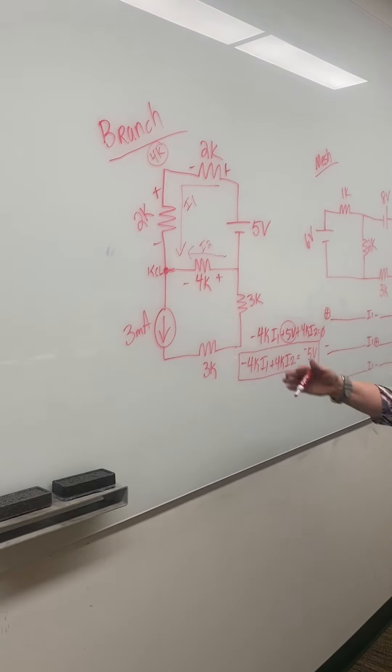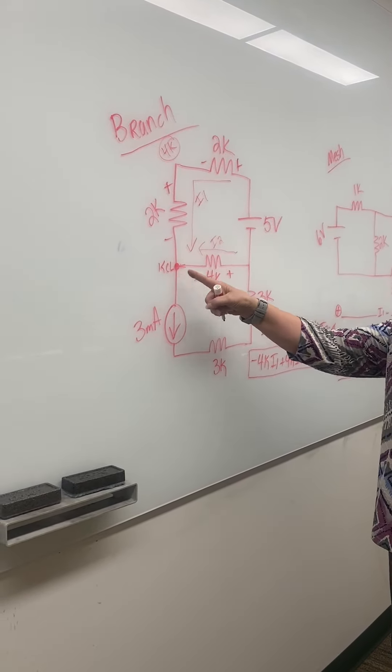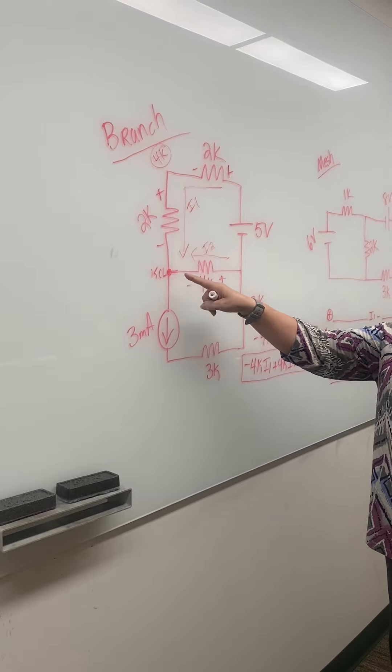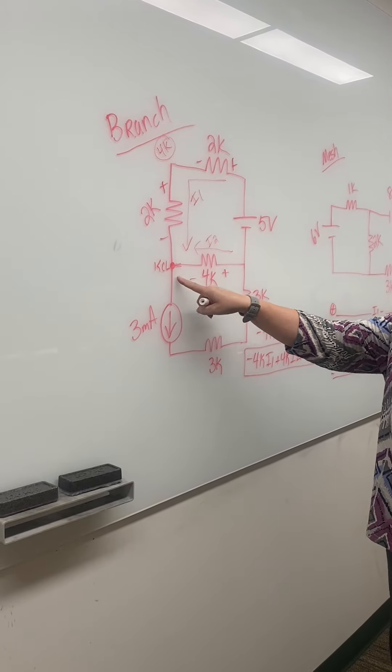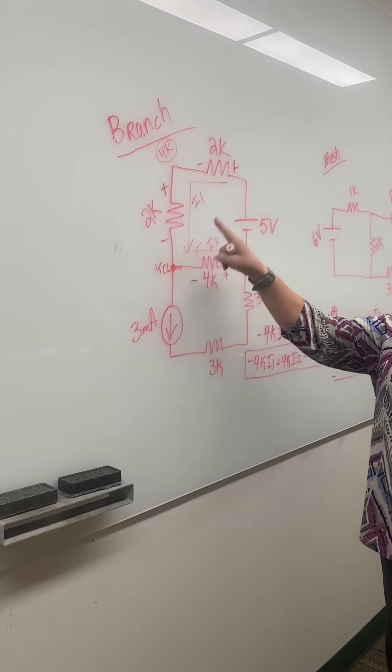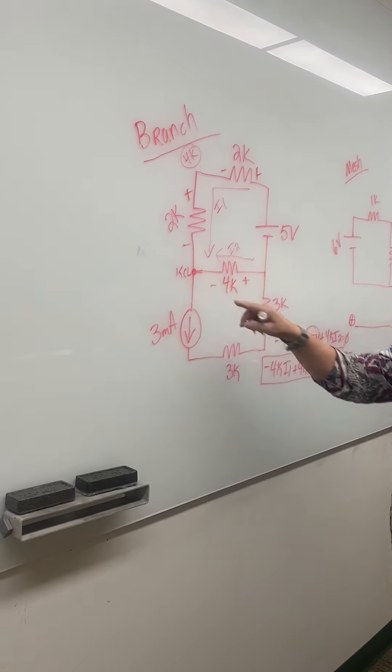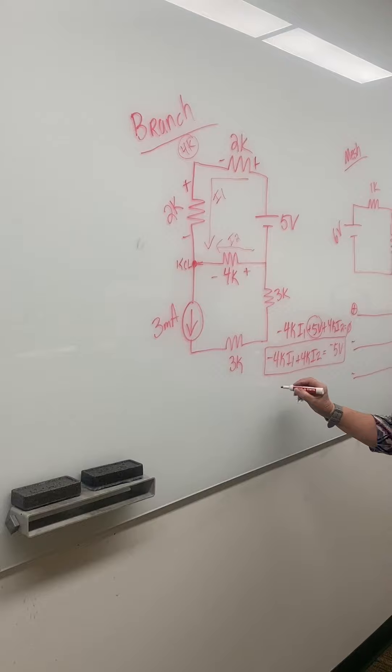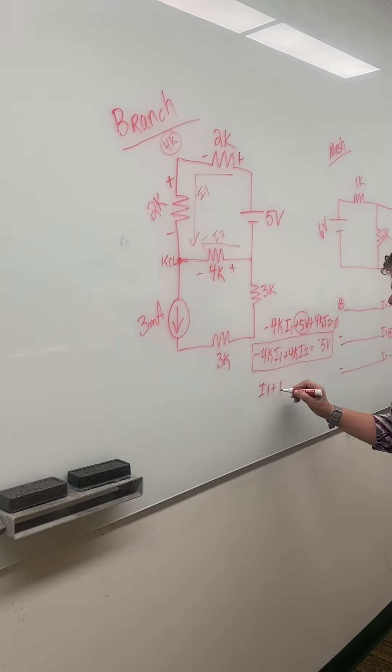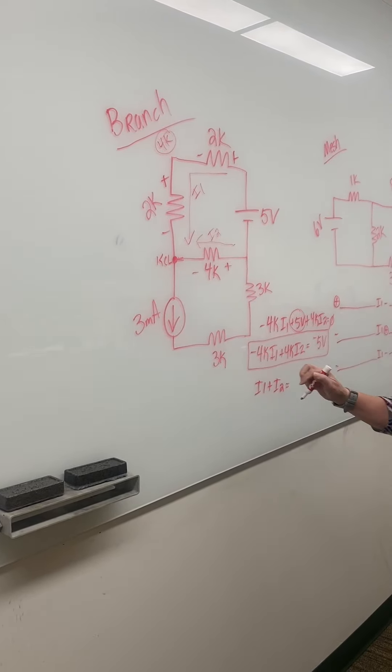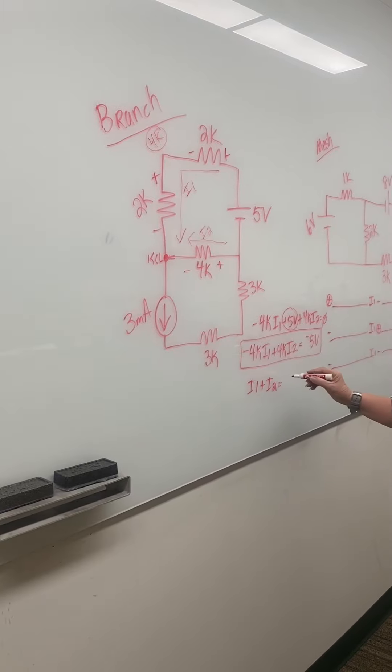I know I have to write a KCL, right, and it's at this dot. What currents are entering equals leaving. So at this dot, I have I1 entering this dot, I2 entering this dot. So I1 plus I2 equals what's leaving, which is this 3 milliamps.